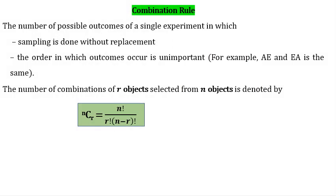Next, the Combination Rule: the number of possible outcomes where sampling is done without replacement and the order in which outcomes occur is unimportant — for example, AE and EA are the same. The number of combinations of r objects selected from n objects is nCr = n! / (r! × (n − r)!), or use the C button on the calculator.